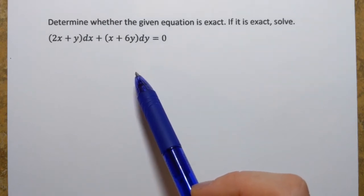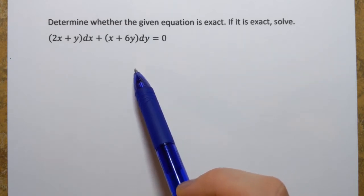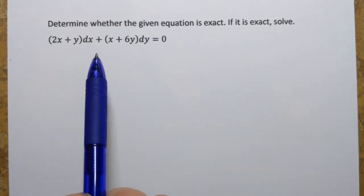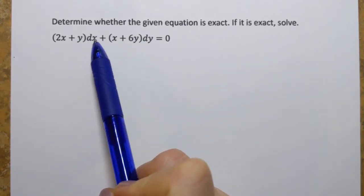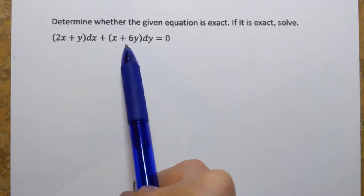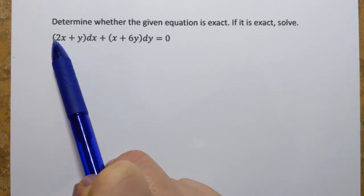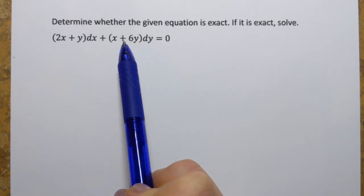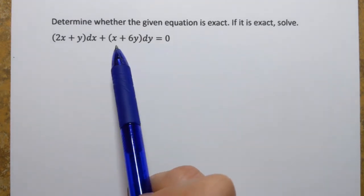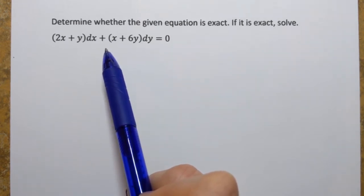Hi, everyone. In this video, we're going to solve an exact differential equation. But first, we'll need to check if it's indeed exact. Remember that an equation is called exact if those two functions next to dx and dy are partial derivatives of the same function f of x, y. That would be the partial derivative with respect to x, and the partial derivative with respect to y. And if they are partial derivatives of function f, then that function f is the solution. So our goal is to find it.